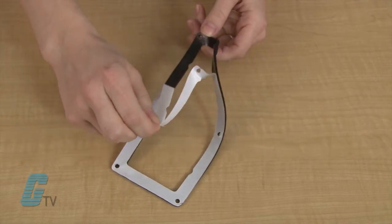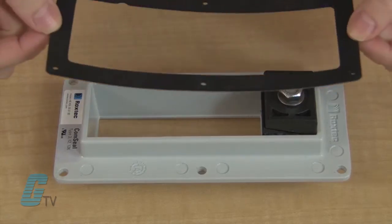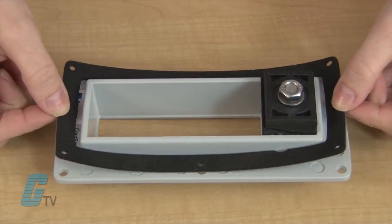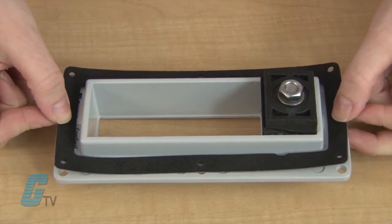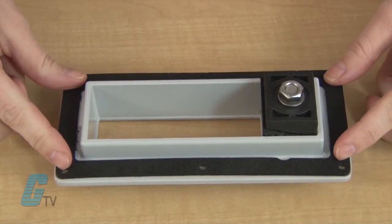Next, the protective foil can be removed from the gasket, which can then be placed firmly on the back of the frame. Make sure that the holes are lined up to ensure proper installation.